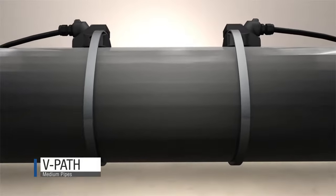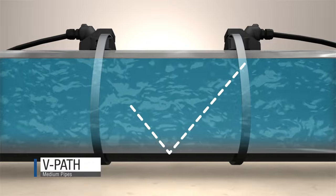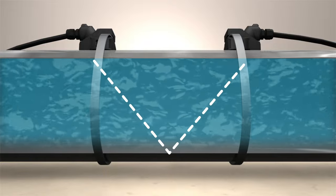A V path or 2 traverse has transducers mounted on the same side and signals reflect off the inside of the pipe. This positioning is easier to install.